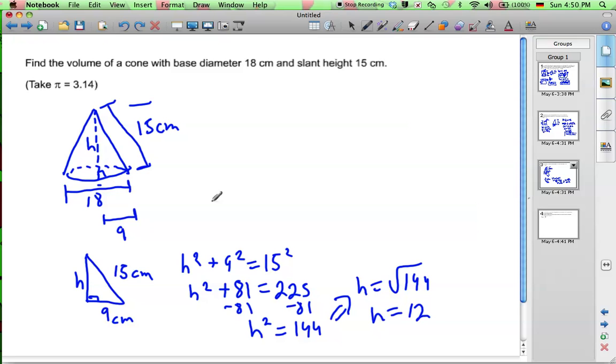So that's our height of our cone. So now we can go ahead and find the volume of the cone simply using the volume formula. The volume equals 1 third times pi times radius squared times the height. Volume equals 1 third times pi times 9 squared times 12. And let's go ahead and work that out.